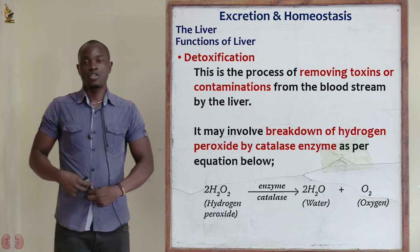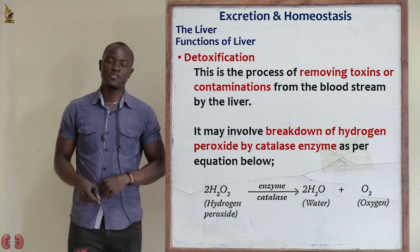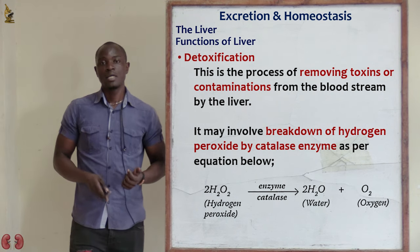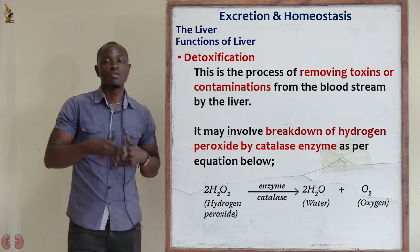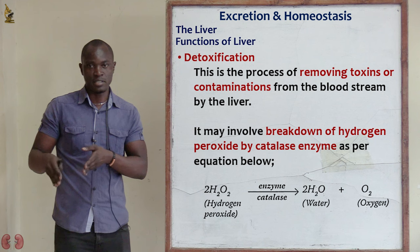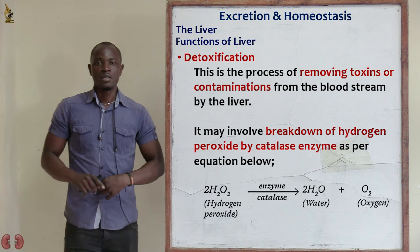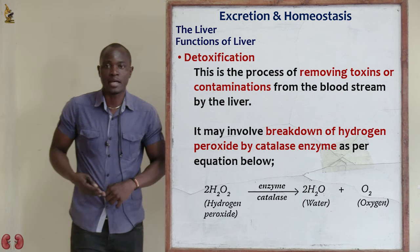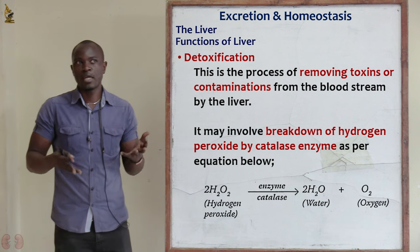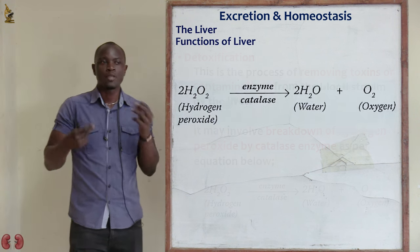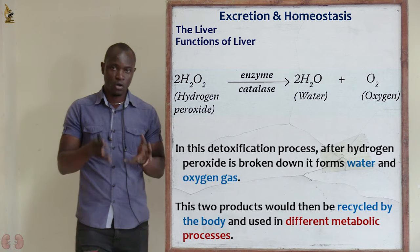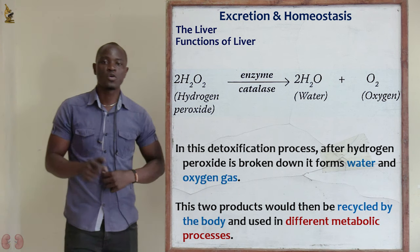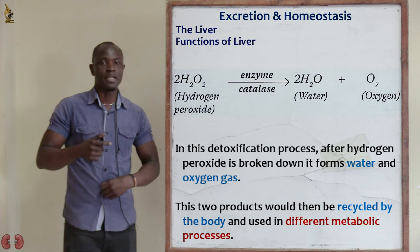The second function of the liver is detoxification — the process of removing toxins from the blood. Some toxins under detoxification will be converted to less harmful substances. Under the normal process of respiration, hydrogen peroxide is broken down by the enzyme catalase to form water and oxygen, which is harmless to the body.